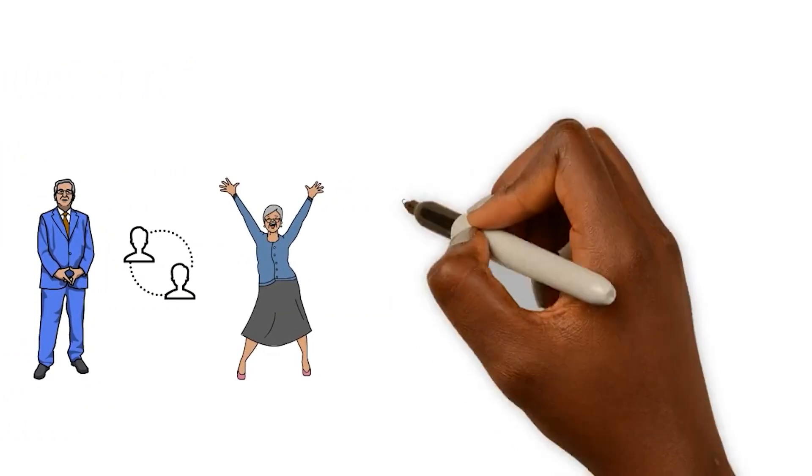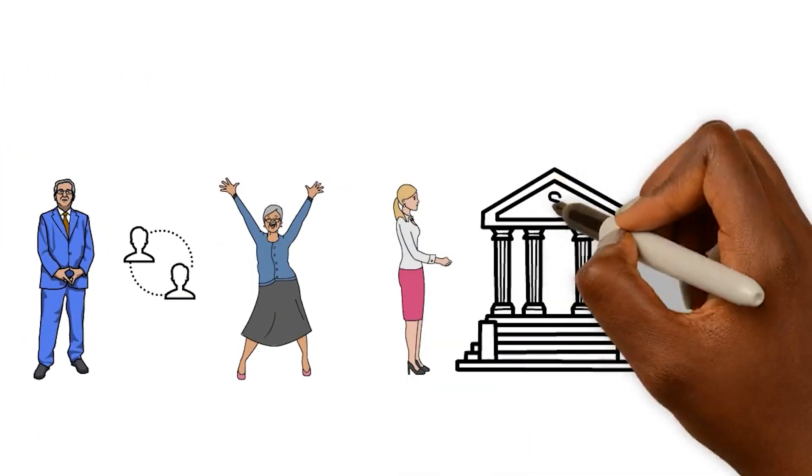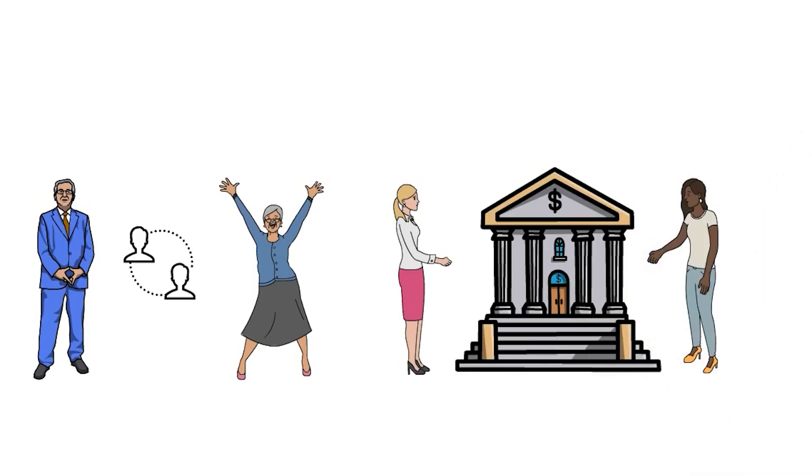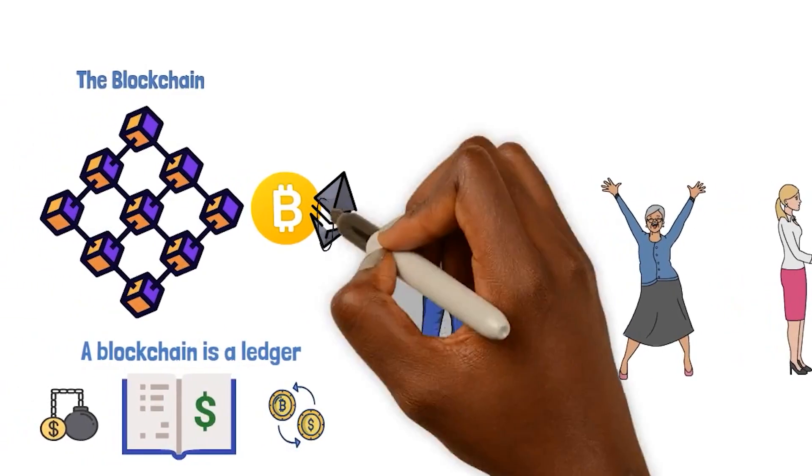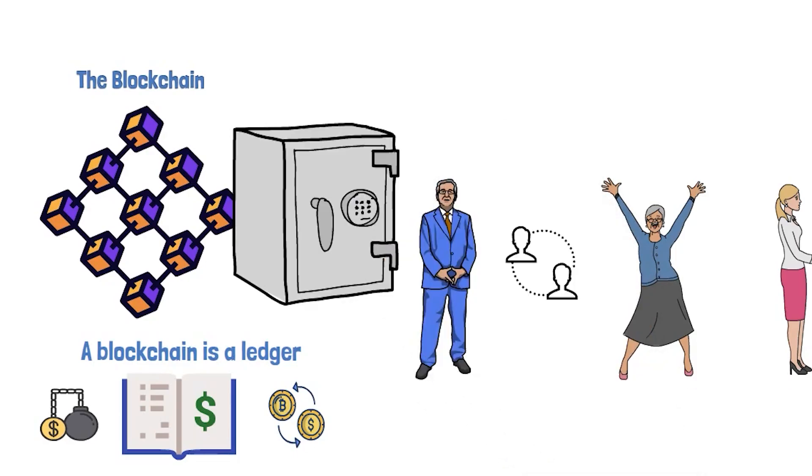This can be done without the need for an intermediary, like a bank or a government. A blockchain has certain properties that make it difficult to hack or modify without having access to all the copies.